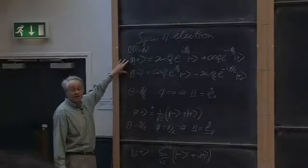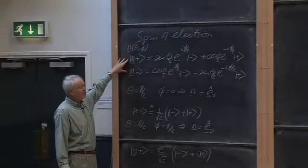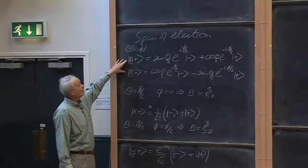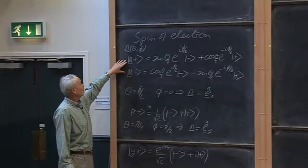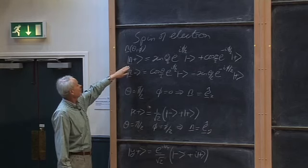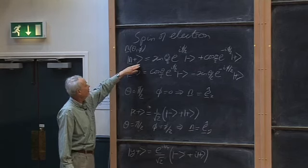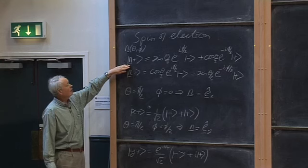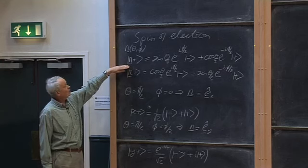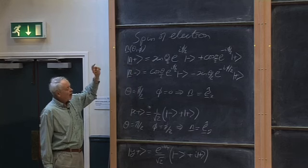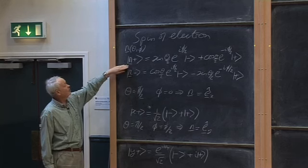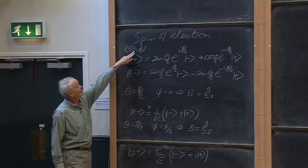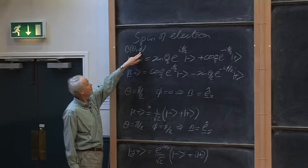I'd asked you to take on trust a result that will be derived further down the course. These results express the state in which you, a spin-half particle like an electron, are certain to have plus a half for the answer to its spin along the unit vector n, given by the polar angles theta and phi.